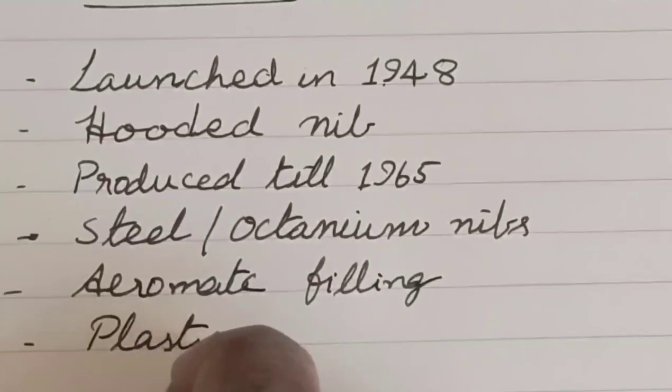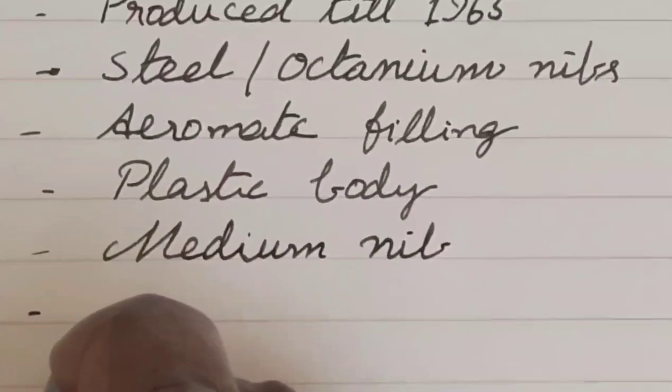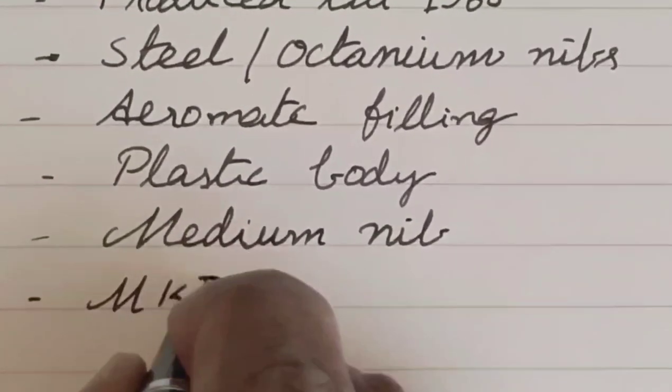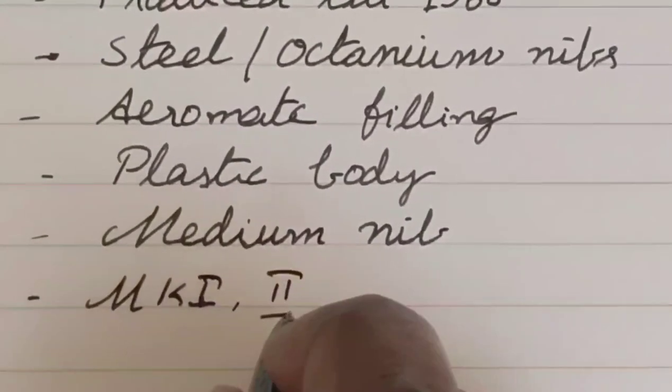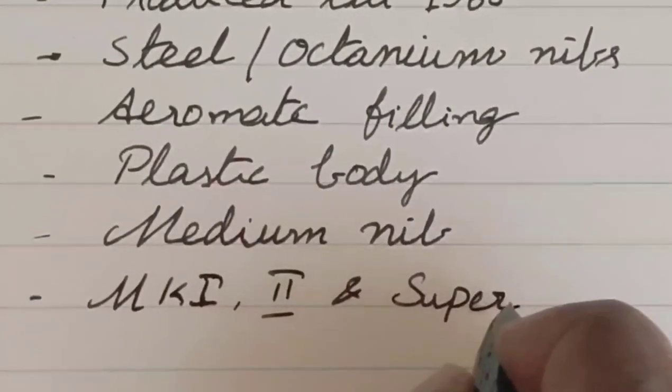I heard that Parker 21 also comes with a steel barrel. Based on the design of the cap, Parker 21 has submodels like MK1, MK2 and Super. Based on the design of my cap, I can say my Parker 21 belongs to the Super category.